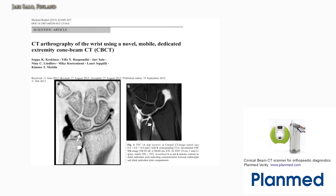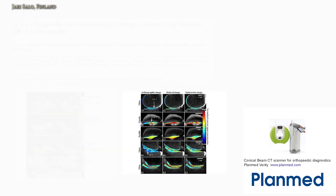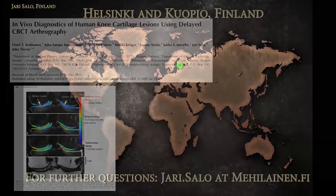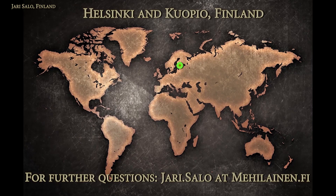Here are some examples of published papers. Our first paper on contrast enhancement was a hand surgery study comparing conical beam CT scanners to MR arthrography. We have also done delayed imaging to follow the penetration of contrast media into the cartilage to assess its internal quality. I hope I have given you the initial idea of what can be done with a CBCT scanner like the Verity scanner — both contrast enhancement and native imaging. If you have any further questions, please do not hesitate to contact me. Thank you.